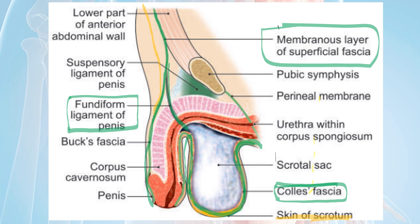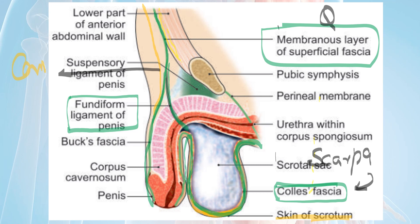Scarpa's fascia also forms the fundiform ligament of the penis, or the suspensory ligament of the penis or clitoris. The third layer is the deep adipose layer, which is variable. Key point to remember: Scarpa's fascia continues as Colles' fascia, and Camper's fascia continues as the dartos muscle.